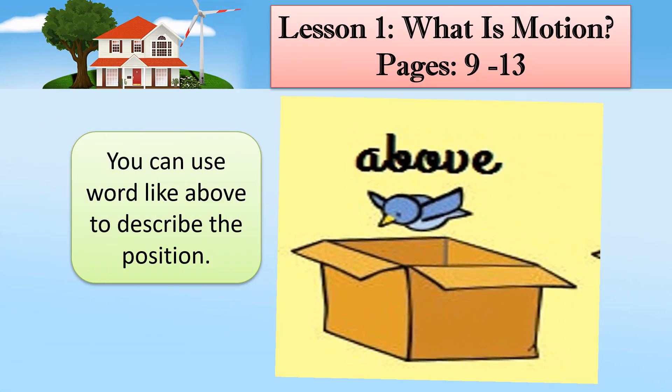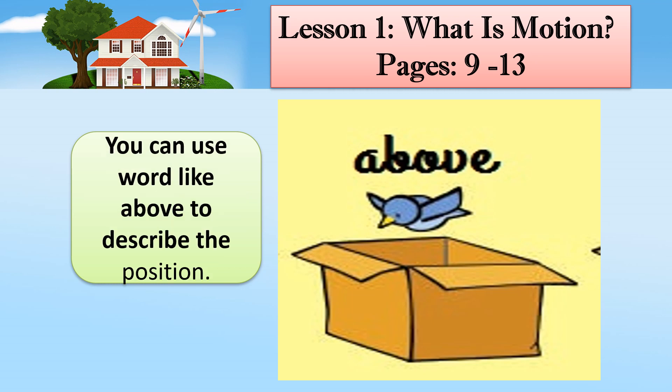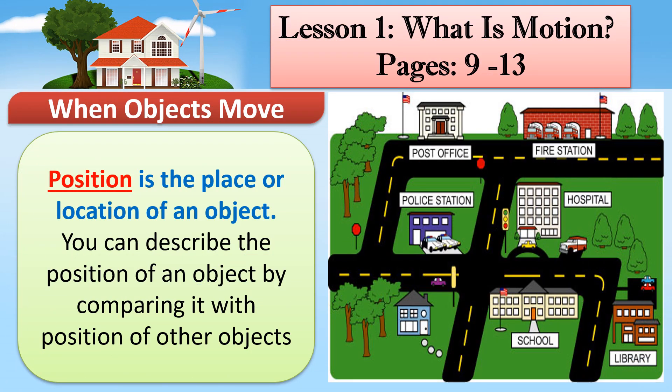Now, in this picture, where is the position of the bird? Your answer should be above the box. So you can use the word above to describe position. At the end, we should know the meaning of position. Position is the place or location of an object. You can describe the position of an object by comparing it with the position of other objects.